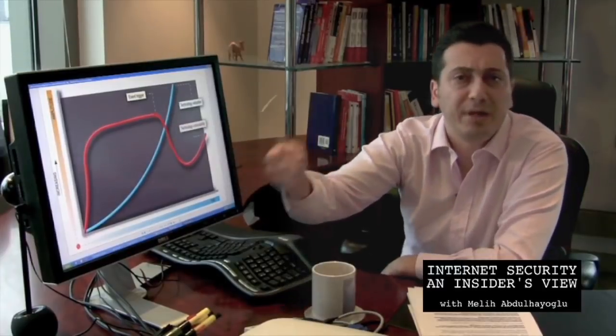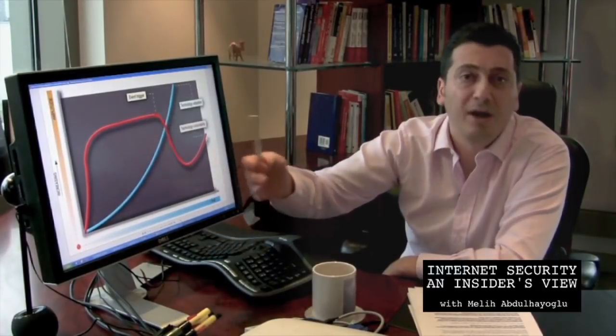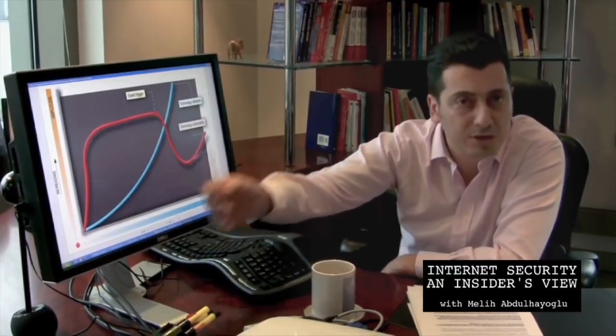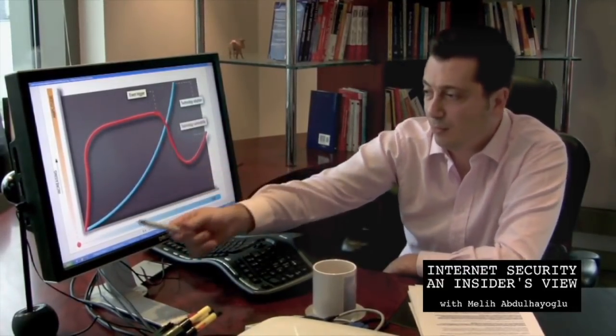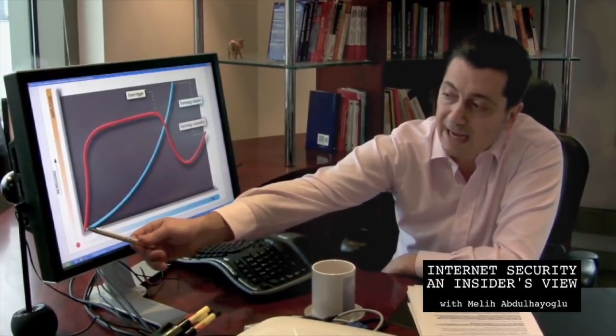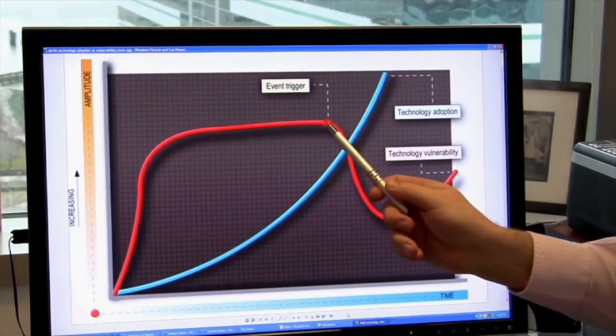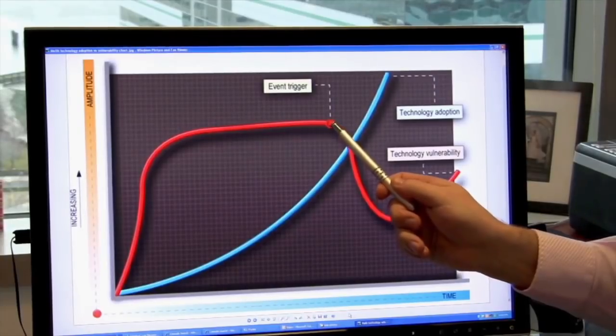That technology could be anything from cars, trains, airports, airplanes, to internet search engines, security software - it could be anything. I'm going to show you how that technology, when it starts, has vulnerabilities.